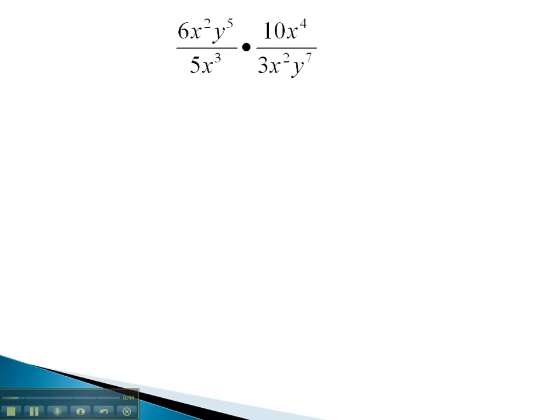In this problem, we can multiply across the numerator, 6 times 10 to get 60, and add the exponents on the x. 4 plus 2 is x to the 6th. We also have a y to the 5th.